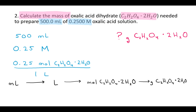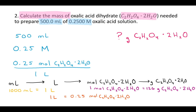Each of those arrows represents a conversion, and for every conversion you need a conversion factor. For milliliters and liters, that's 1,000 milliliters equals 1 liter. For liters and moles, I use the molarity: for every one liter I have 0.25 moles of oxalic acid dihydrate. Then to go from moles to grams, you add up the molecular mass — two carbons is 12 times 2 equals 24, and so on for each element. Adding them all up gives 126 grams of oxalic acid dihydrate per mole.